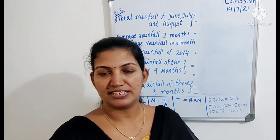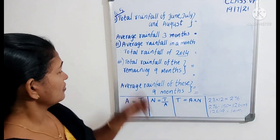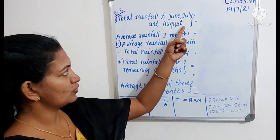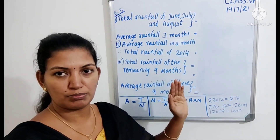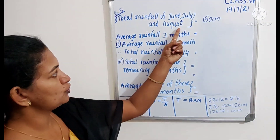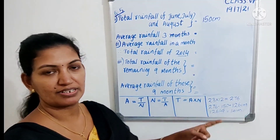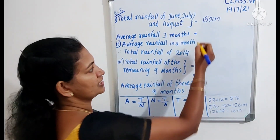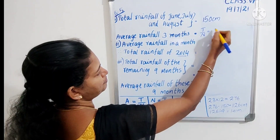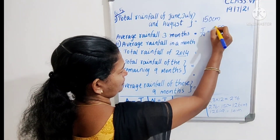We have 3 sub-questions; we will answer them one by one. The first question: the total rainfall of June, July and August is given in the question as 150 cm. We have to find the average rainfall of these 3 months. Since total and number are given, average is equal to total divided by number. Total is 150 and number of months is 3, so 150 divided by 3 is equal to 50 cm.